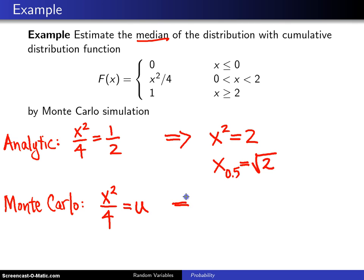And when you solve that for x, you will get x is F inverse of u. And how do you solve this for x? You multiply both sides by 4, now you have x squared equals 4u. And then you take the positive square root, and you're going to get 2 times the square root of u, where u is uniformly distributed between 0 and 1.